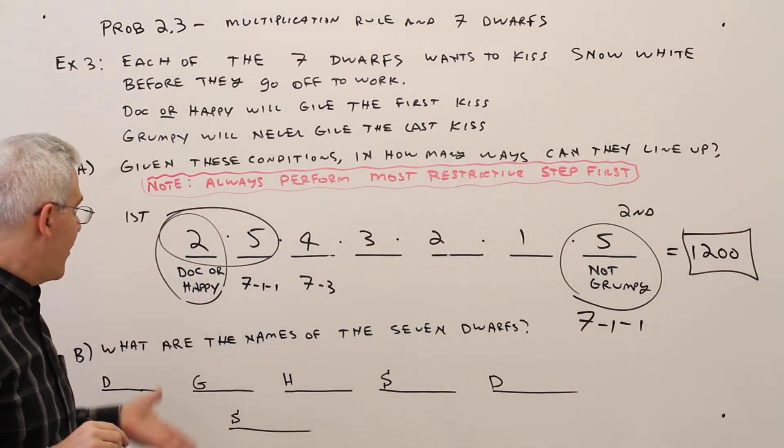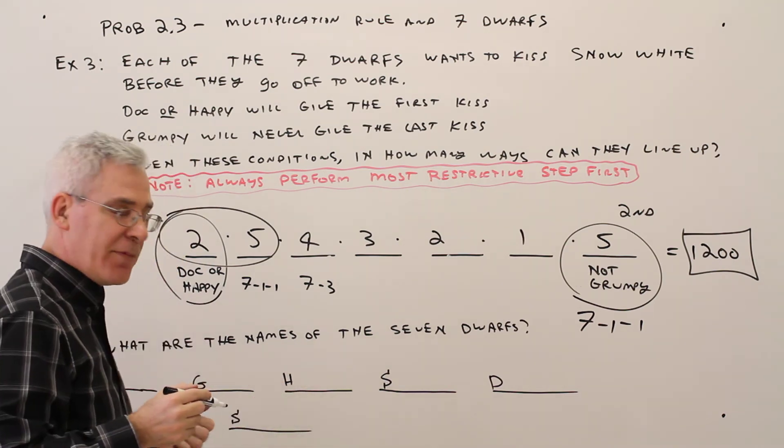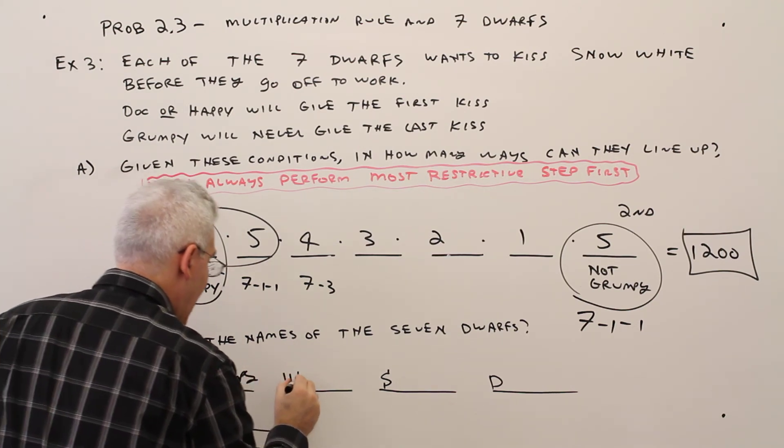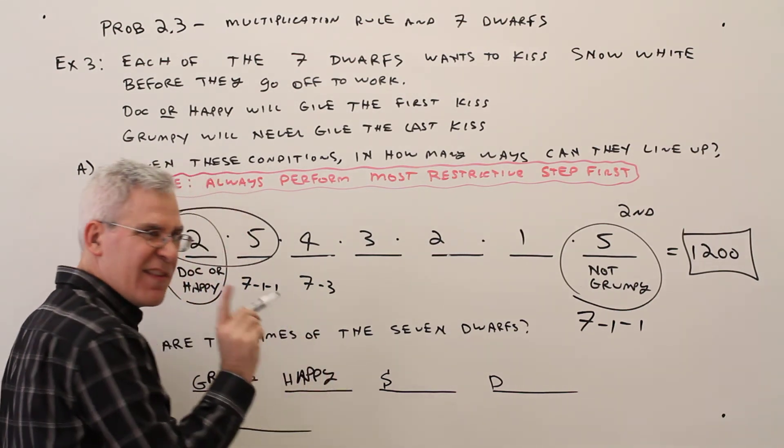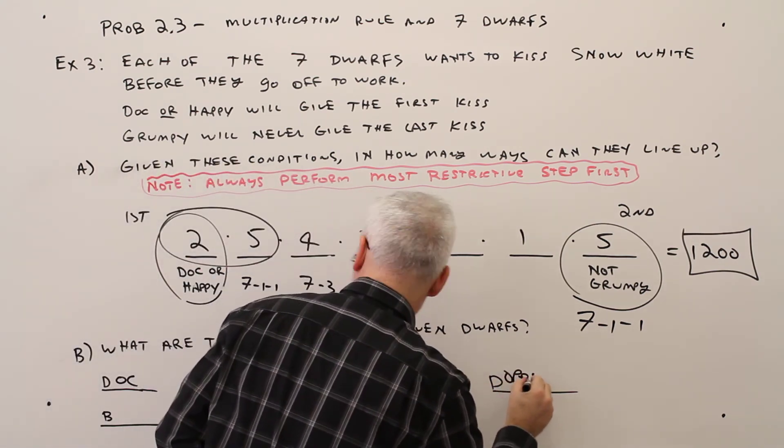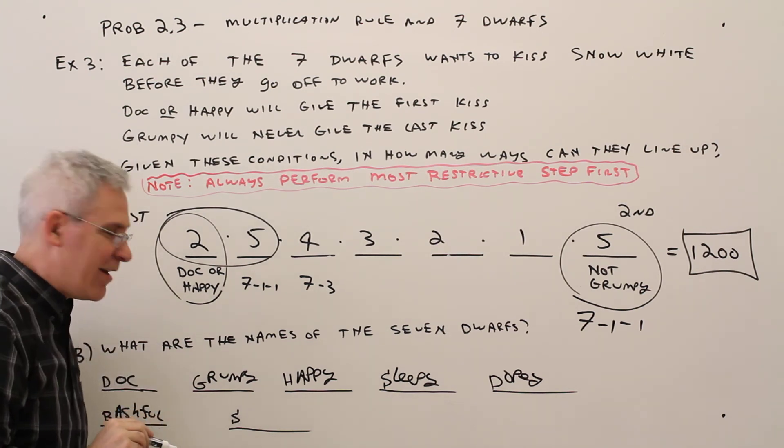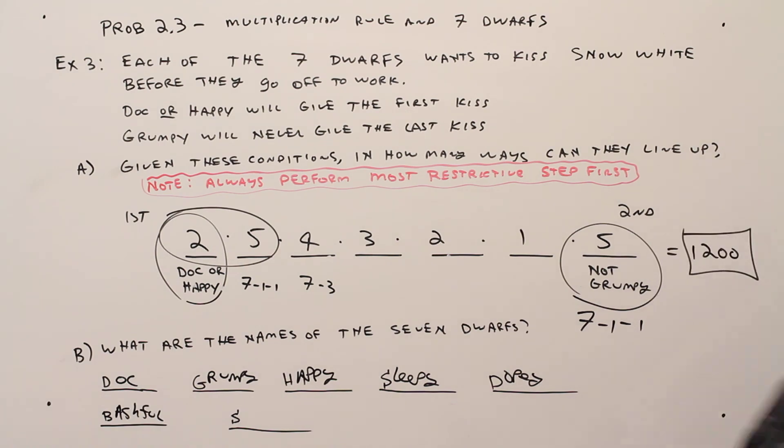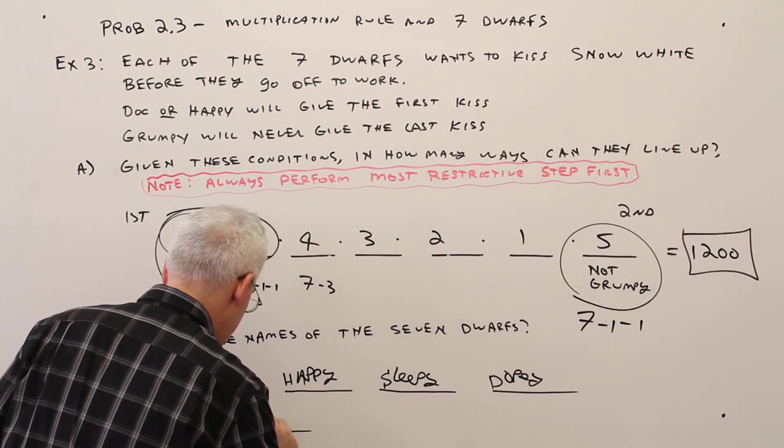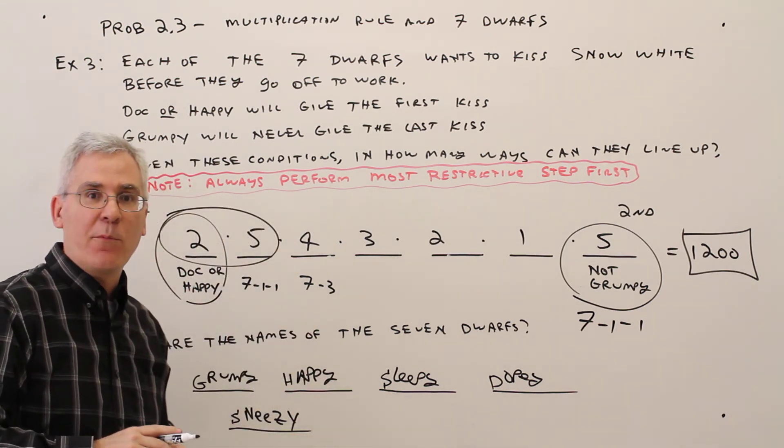And then I just added this one with the names of the seven dwarves. I'm not 100%, I keep forgetting. So I think it's Doc, Grumpy, Happy, Sleepy, Dopey, Bashful. And the second S, I forget. Sneezy, how could I forget? This was just extra, you don't have to memorize the seven dwarves.